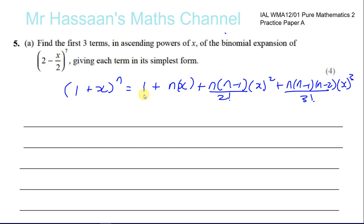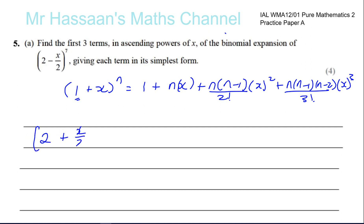We're only concerned about the first three terms — terms 1, 2, and 3, up to the x squared term. You have to be careful that the leading term here must be 1. So here we have 2 minus x over 2, and that leading term has to be 1. What I'm going to do is say: 2 minus x over 2 to the power of 7 equals — and I'm going to take out 2 from this bracket.